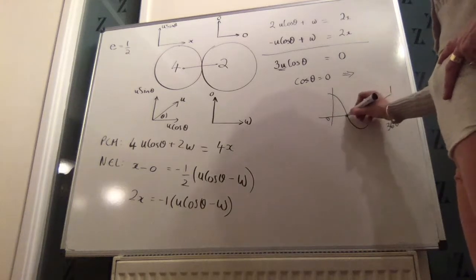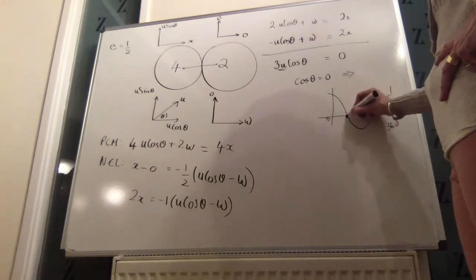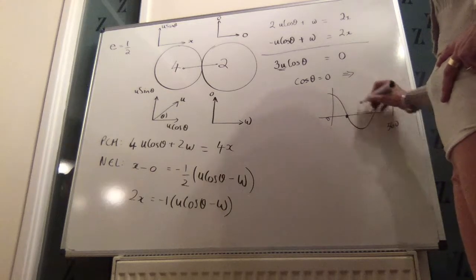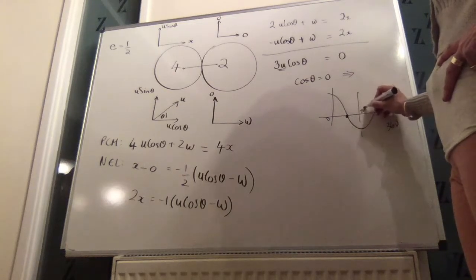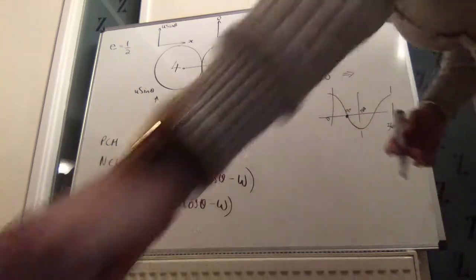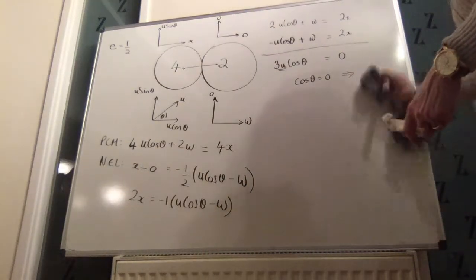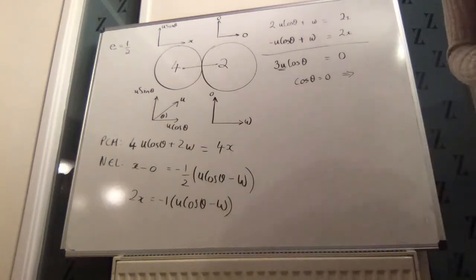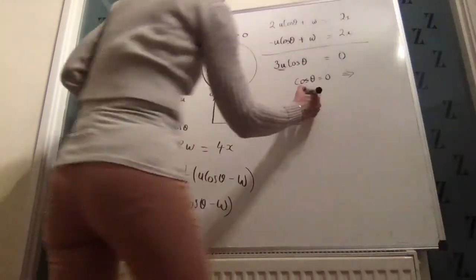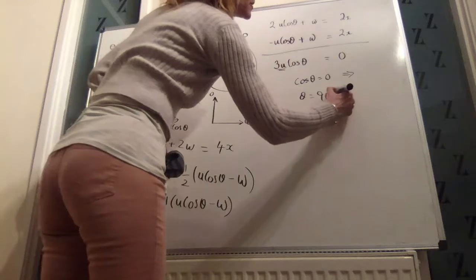And that would only work if you look at the cosine from 0 to 360. So, the place where cosine theta is 0 is if theta is 90 degrees. And you can check it by looking up the cosine inverse of 0 anyway. So, theta must be 90 degrees. What does that mean?